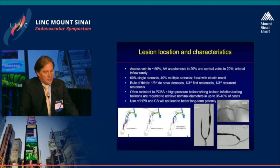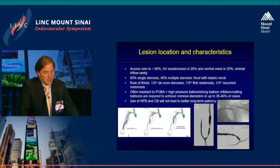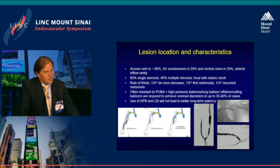These histological differences produce incongruent wall stretching and intimal proliferation. The lesions are not like arterial lesions — they are typically located in the access vein: 60% at the level of the anastomosis, 20% elsewhere in the access vein, and another 20% in the central vein. Arterial inflow problems are very rare. Most of the time it is a single stenosis in 40% of cases, with multiple stenoses in others, and the lesions are typically focal with a large tendency to elastic recoil.